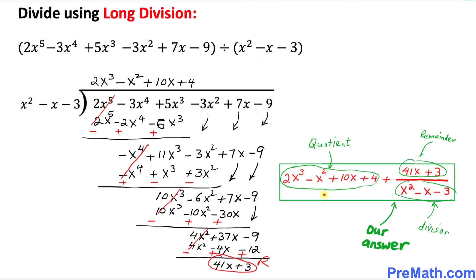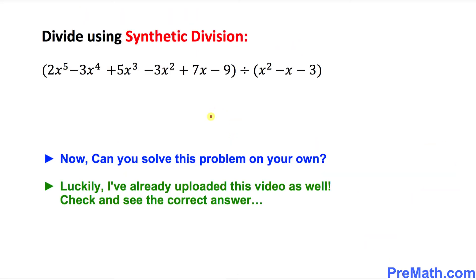So our answer consists of the quotient on top and the remainder of 41x plus 3 over the divisor. That's our final answer. Your assignment: can you do the same problem using synthetic division? You can pause the video. I have already uploaded that video as well, so please check it out for the correct answer. Thanks for watching and please don't forget to subscribe for more exciting videos.